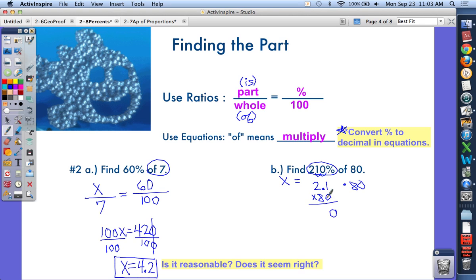All I'm going to do is multiply these. So 2.1 times 80. Please don't pull your calculator. 8 times 1 is 8, 8 times 2 is 16. We have one decimal place in the numbers you're multiplying, so move it over 1 in your answer. X equals 168.